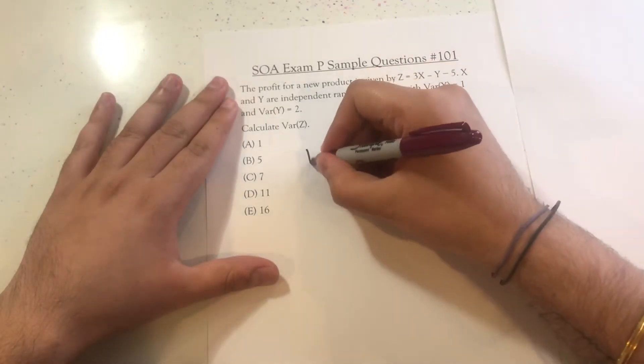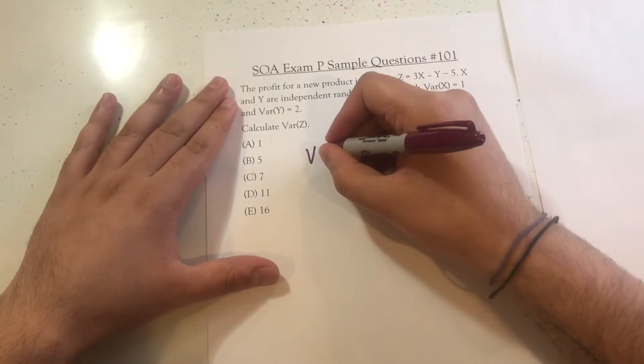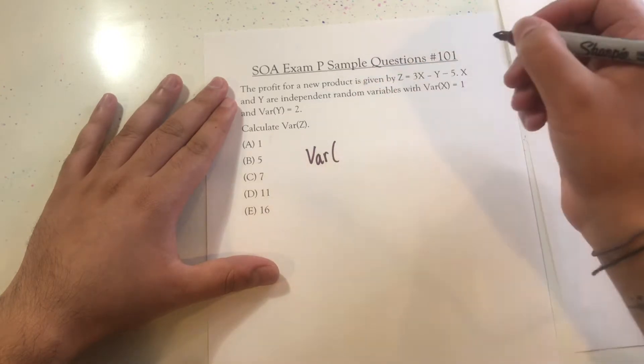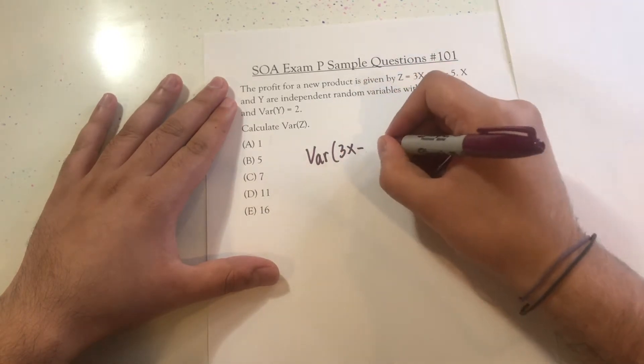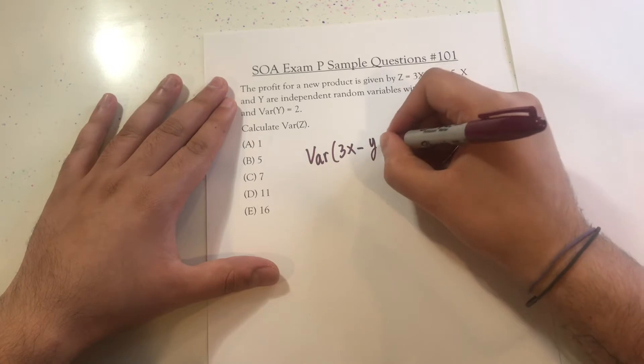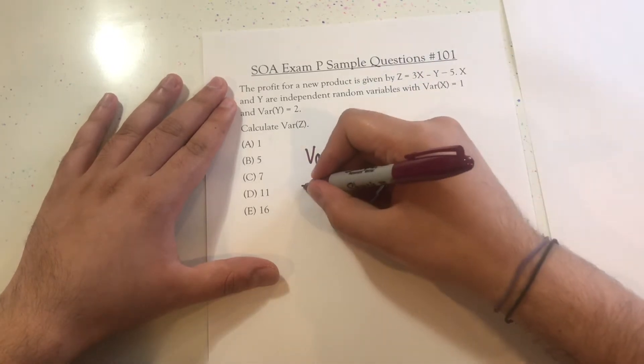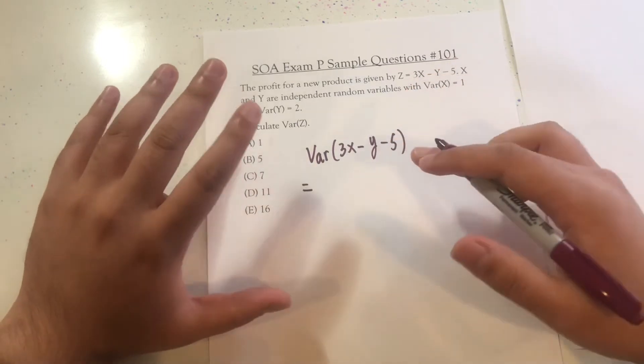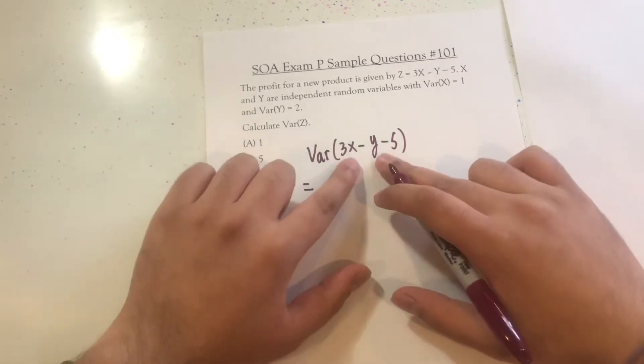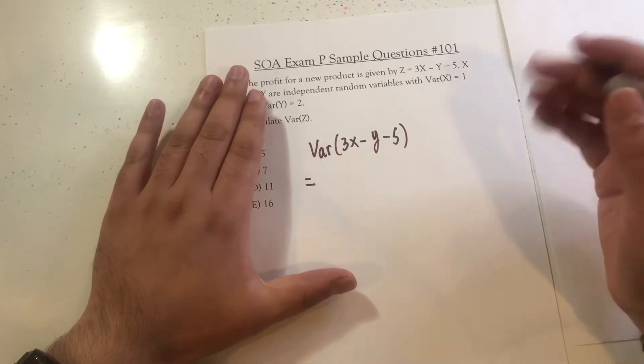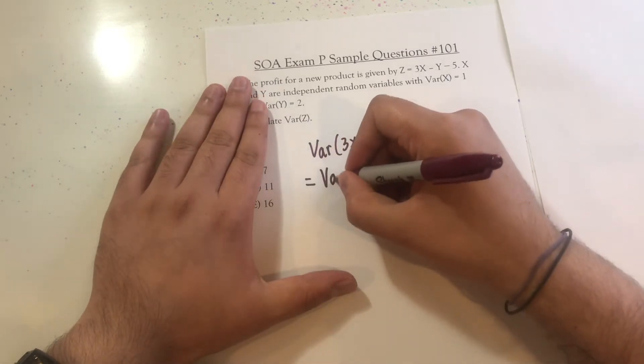right? And as stated up here, Z is 3X minus Y minus 5. Now, I can rewrite this, because when you're calculating a variance and you're adding or subtracting a constant, it should be the exact same without that constant.